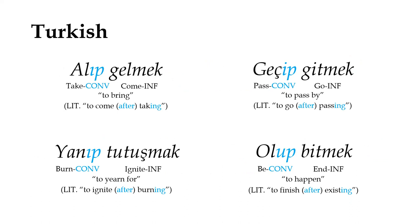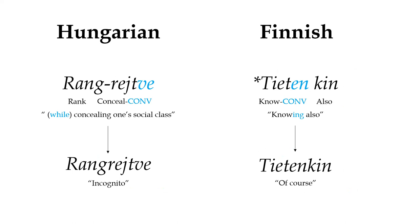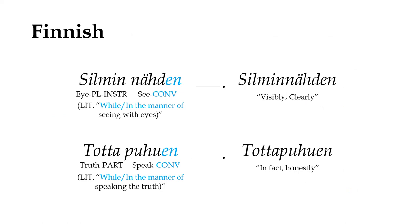Once converbs have evolved, they're very likely to be grammaticalized into new constructions. Beyond the clause chaining we discussed earlier, converbs serve as a very convenient way to combine multiple verb meanings into a single lexeme. If a specific converb phrase sees especially frequent use, its constituents may end up fusing into a single adverb. In Finnish, the word for clearly or visibly derives from a converb clause meaning in the manner of seeing with eyes, while the word meaning in fact or honestly comes from the converb phrase while speaking the truth.